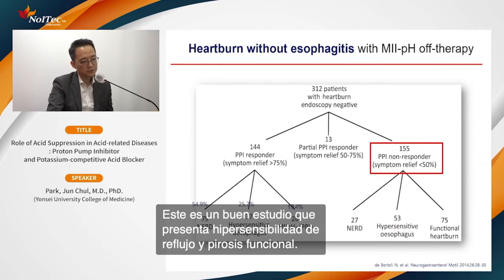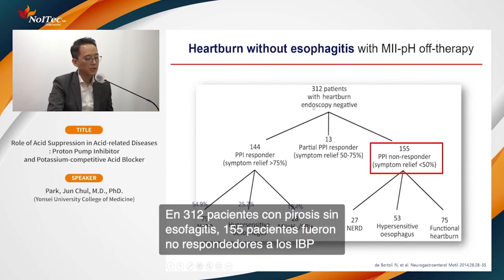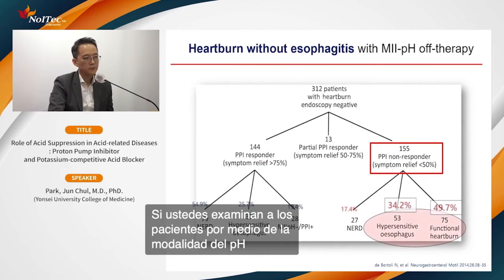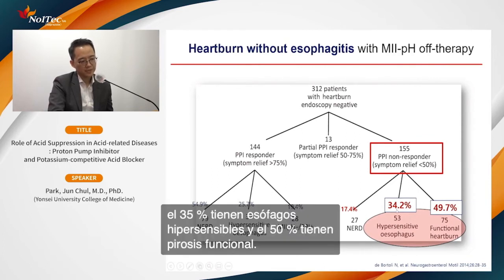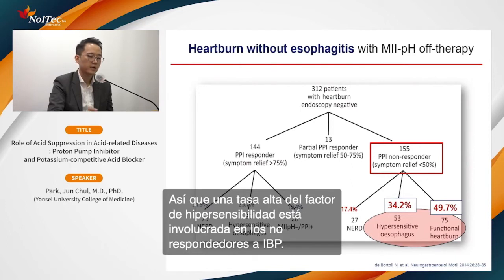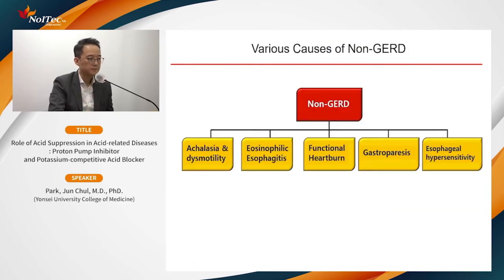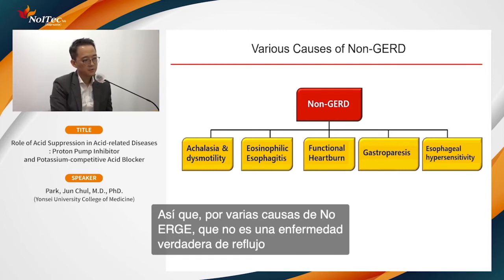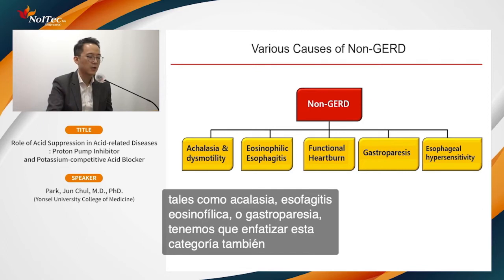One study of over 312 patients with heartburn but no esophagitis showed 155 were non-responders with less than 50% symptom relief. pH monitoring revealed 35% had esophageal hypersensitivity and about 50% had functional heartburn — a very high rate of hypersensitivity involvement in PPI non-responders. Non-GERD conditions like achalasia, eosinophilic esophagitis, or gastroparesis must also be considered. Studies show 40–65% of PPI prescriptions may lack an appropriate indication.